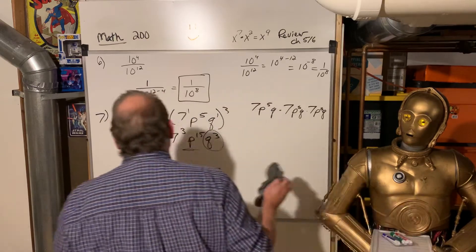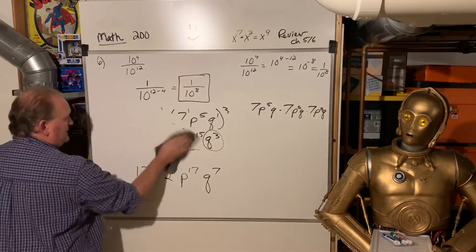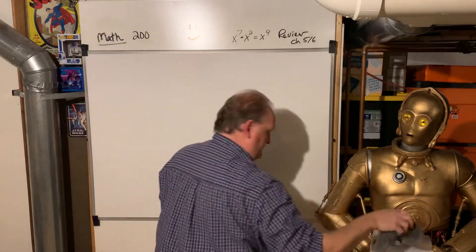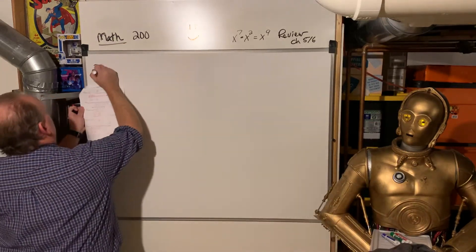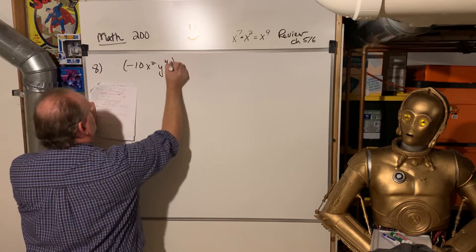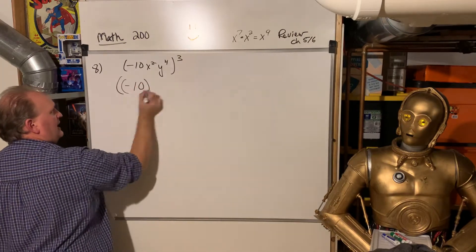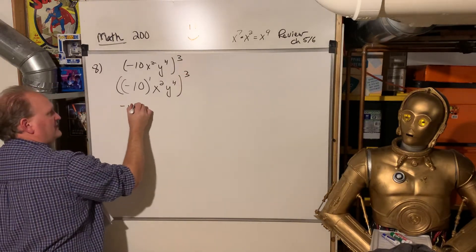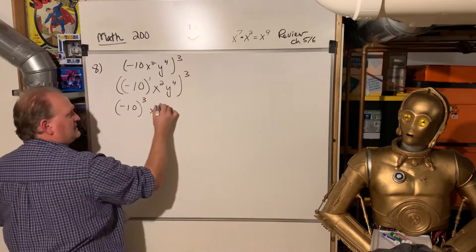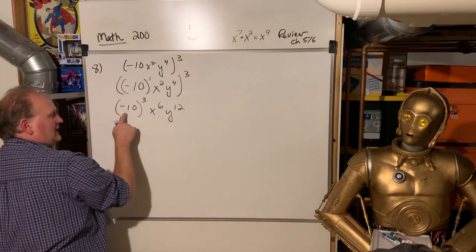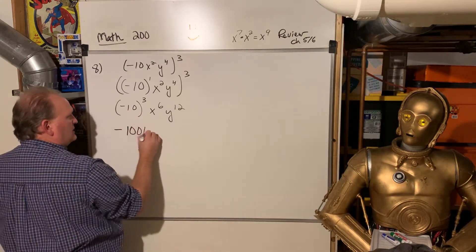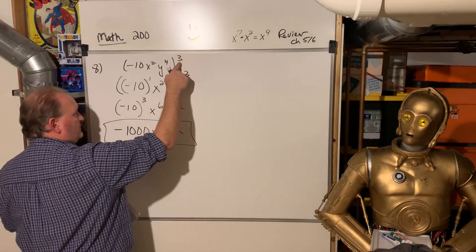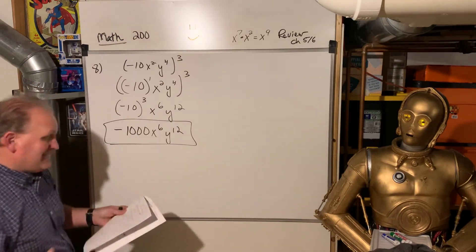Number 8 is a little harder because we've got a negative coefficient. When we have negative 10x squared y to the 4th, all raised to the 3rd power, that's negative 10 to the 3rd power times x to the 6th times y to the 12th. A negative times a negative times a negative is a negative, giving negative 1,000 x to the 6th y to the 12th. Had it been to the 4th power instead, it would be positive 10,000.